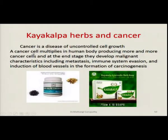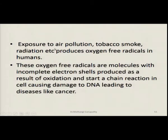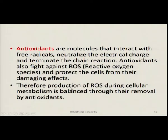A typical example is cancer — a disease of uncontrolled cell growth. Cancer cells multiply in the human body producing more cancer cells, and at the end stage they develop malignant characteristics including metastasis, immune system evasion, and induction of blood vessels with the formation of carcinogenesis. Exposure to air pollution, tobacco smoke, and radiation produces oxygen free radicals in humans. These oxygen free radicals are molecules with incomplete electron shells produced as a result of oxidation, starting a chain reaction in the cell causing damage to DNA, leading to diseases like cancer.